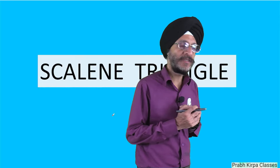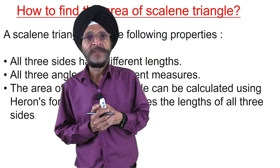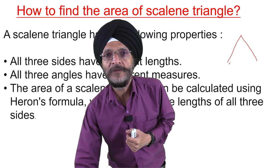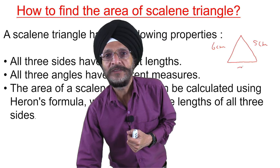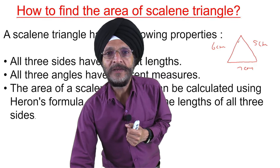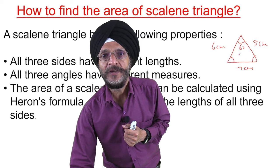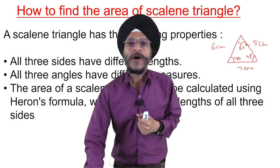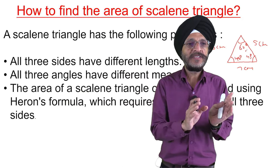The topic before us is the Scalene Triangle. The question arises: what is the meaning of a Scalene Triangle? A Scalene Triangle is a triangle where all three sides have different lengths — for example, 5 centimeter, 6 centimeter, and 7 centimeter. A further property of the Scalene Triangle is that all three angles are different, for example 60 degrees, 40 degrees, and 45 degrees. So all the angles are different and all the lengths of the sides are different. This is a Scalene Triangle.